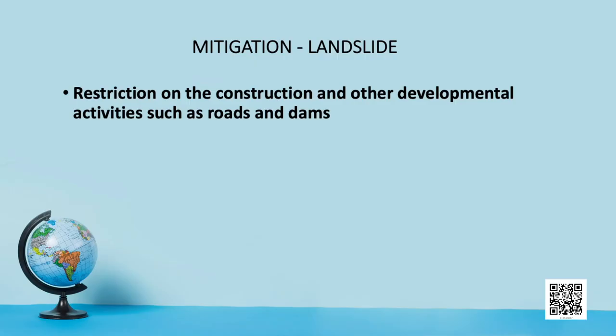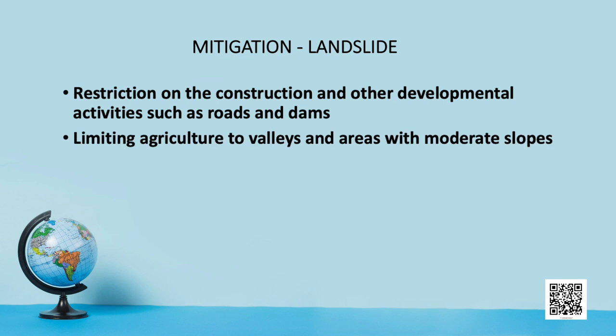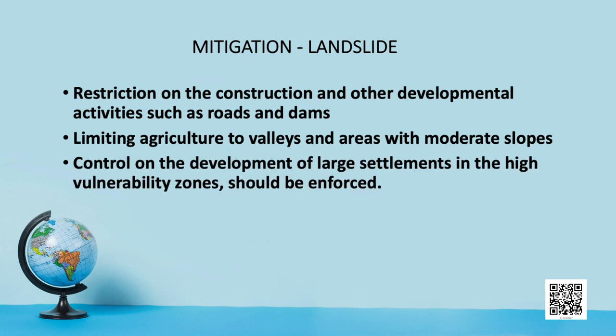It is always advisable to adopt area-specific measures to deal with landslides because India has varied relief features and different terrains. Restrictions on construction and development activities such as roads and dams should be enforced, limiting agricultural practices to valleys and areas with moderate slopes. Control on the development of large settlements in high vulnerability zones should be enforced. These activities should be supplemented by positive actions like promoting large-scale afforestation programs, construction of bunds to reduce water flow, and encouraging terrace farming and step farming in the northeastern hilly states.